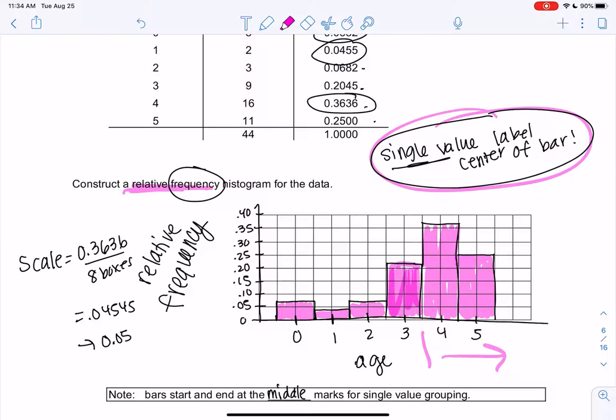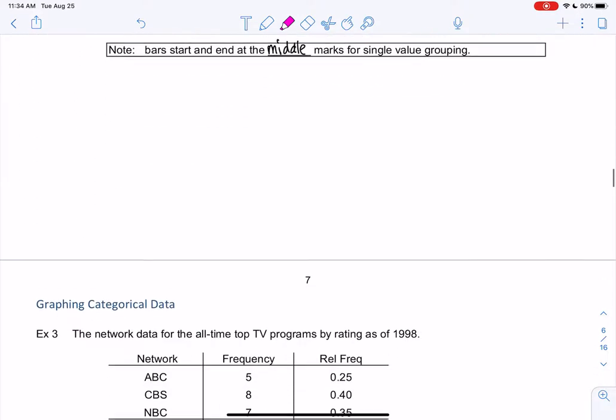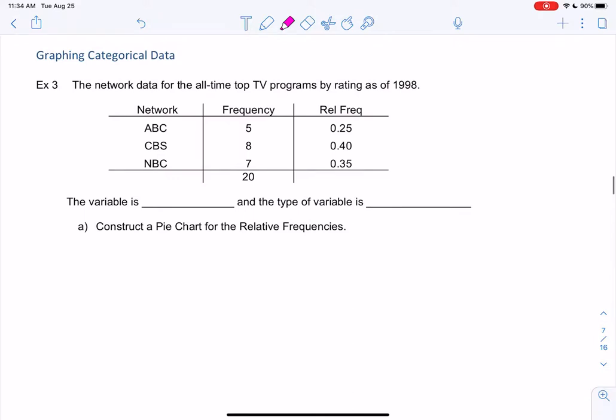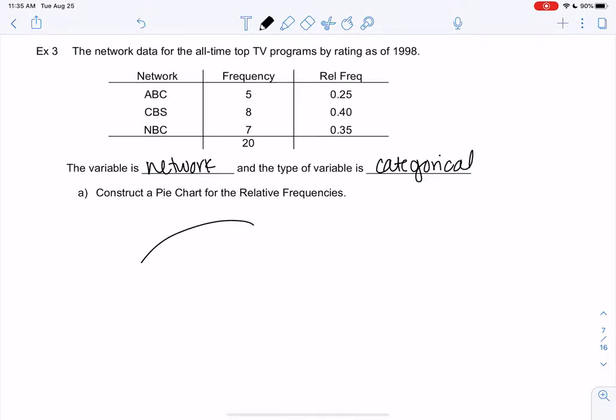Cool, I think I just have one more, let's do one more graph. So for categorical data we're still going to make these bar graphs, but they're going to look a little different. So let's start with a pie chart and then we'll do a bar graph. So we're going to go back to that network data, our variable is network, right, and this is categorical because it's in words.